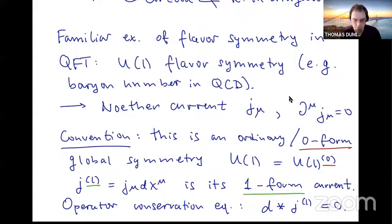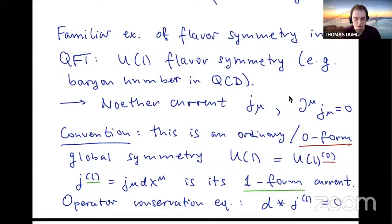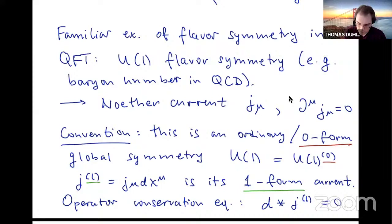Let me start very slowly with some basics about symmetry in quantum field theory. For the purposes of this talk, essentially all symmetries will be continuous and there'll be currents associated with them. A familiar example of a flavor symmetry in quantum field theory is an abelian U(1) flavor symmetry like baryon number in QCD. It comes with an associated Noether current J_mu that satisfies an operator conservation equation like that.